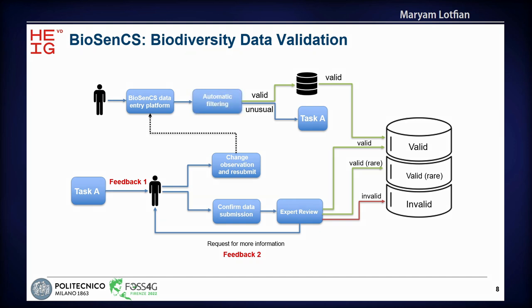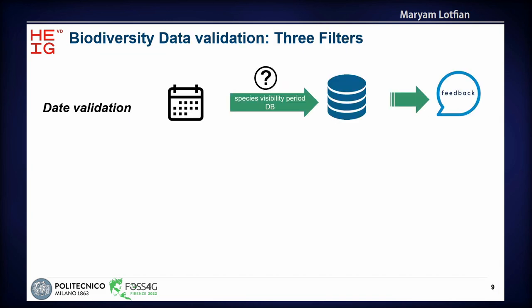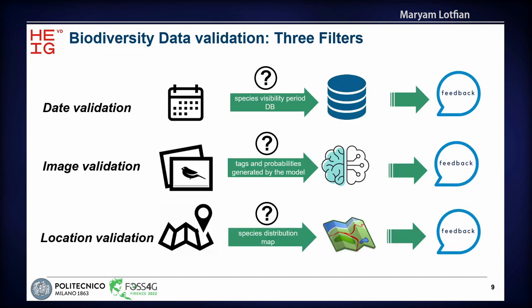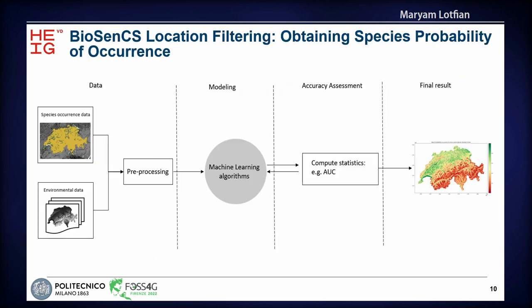The filters applied in BioSense ES are three types: date filtering, image validation, and location validation. In this presentation, I'm focusing only on location validation. For location validation, we used species distribution modeling to validate the location of biodiversity observations. We use species observation data along with environmental variables to train machine learning algorithms, and then use the generated models to validate the location of new added observations.